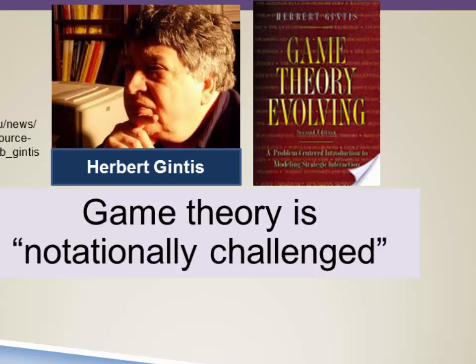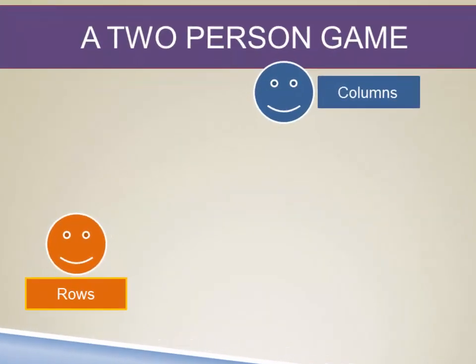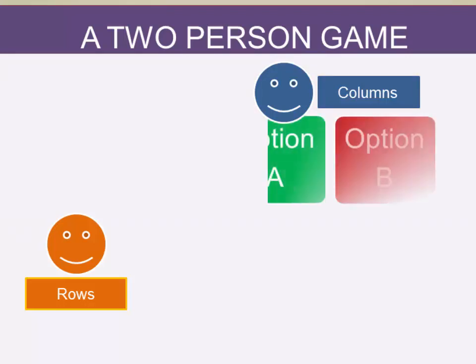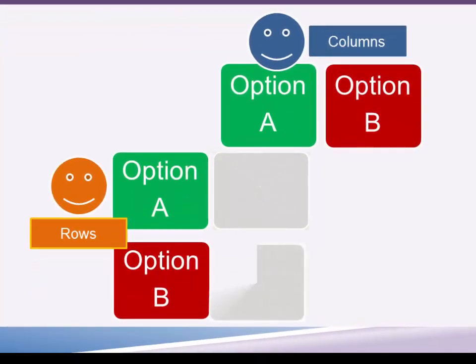The simplest games are two-person games, where there are two actors. We're going to use blue and orange again. Blue plays the columns of the game and orange plays the rows. Each player has two options: blue can play either option A or option B, and orange can also play option A or option B. That means there are four possible outcomes, because each outcome is the result of the decision of both players — it's not what just one player does that determines the outcome.